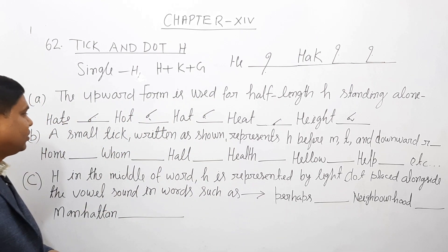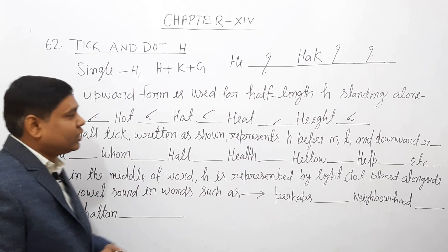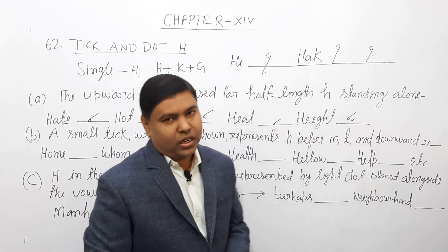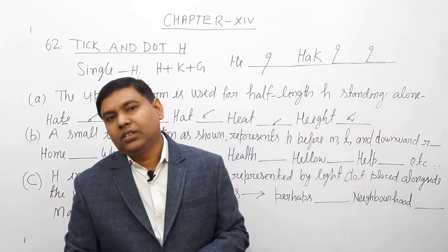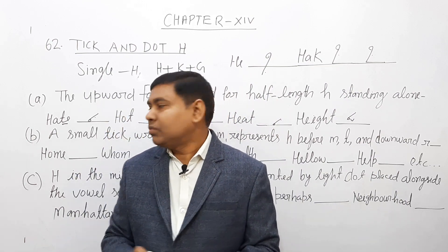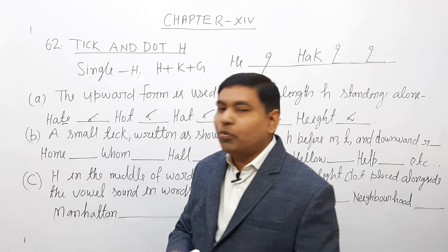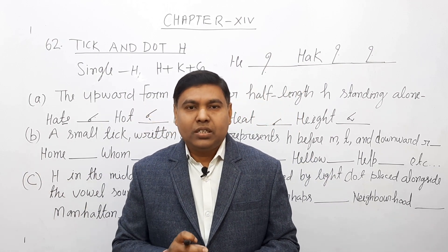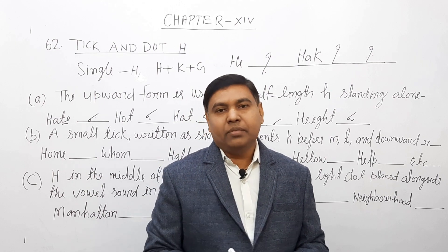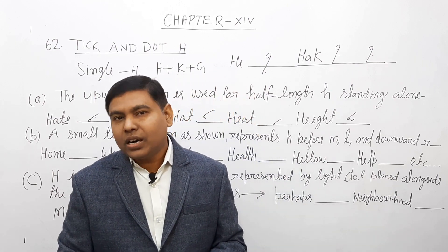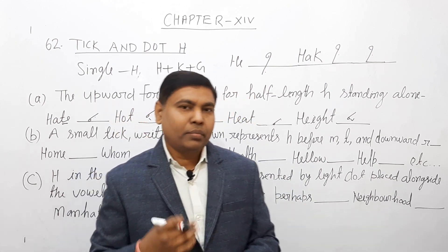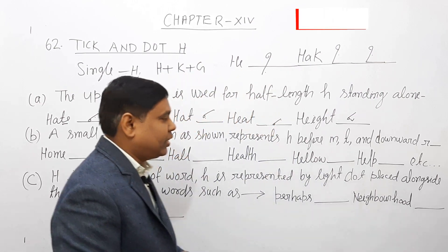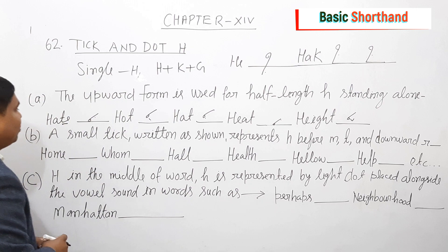Next point है — a small tick written as shown represents H before M, L, and downward R। दूसरा जो इसमें point है — इसमें आप देख सकते हैं कि L, M और downward R से पहले अगर H आता है, तो आपको tick H बनाना है, जो small लिखा हुआ है।